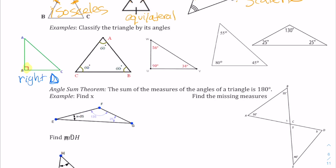This one — each one of these angles is the same measurement. They wrote the number instead of showing congruence with tick marks; we could also use multiple arcs. So each angle is 60 degrees, which means that since we're classifying by its angles, it's equiangular.